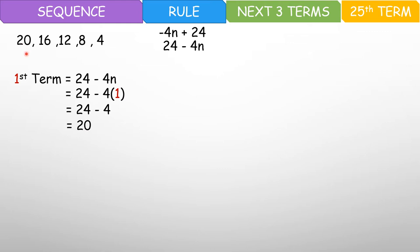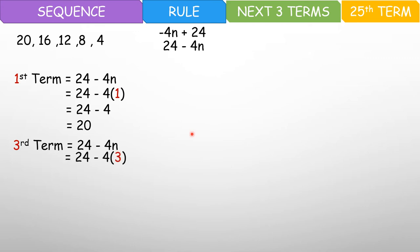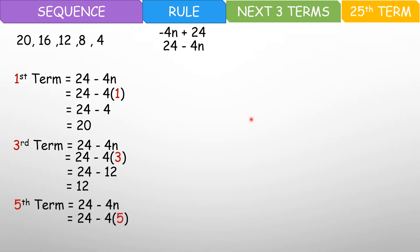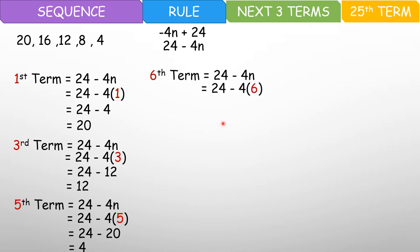At ayan ba yun ang first term natin? Yes. Lumabas siya. So tandaan lang — dapat alam nyo kung anong gagawin. Magdagdag ka ba ng 24? Magdagdag ka ba ng 6? Para lang lumabas ang unang number. So for the third term — 24 minus 4n. Substitute natin ang 3. So you have 24 minus 12. So this is now 12. Eto yung third term. Tama? Fifth term — 24 minus 4n. So 24 minus 4 times 5 — this is 24 minus 20. And fifth term is 4. Sixth term — 24 minus 4 times 6 — 24 minus 24. That is 0.